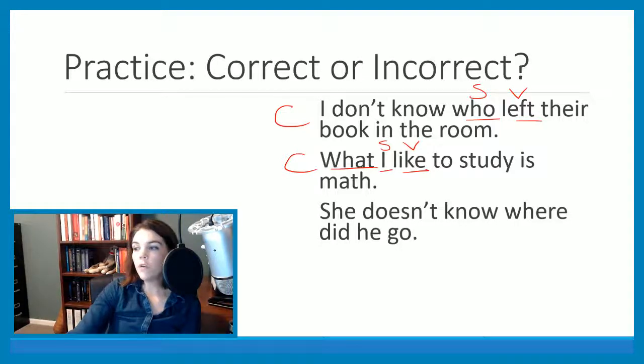She doesn't know where did he go. What do you think? This one is not correct. So this one has the problem of an extra do. We don't need this. She doesn't know where he went. This is going to have our tense. Our tense is not going to be on a do word. It's going to be on the actual verb. She doesn't know where he went. So this one was incorrect.